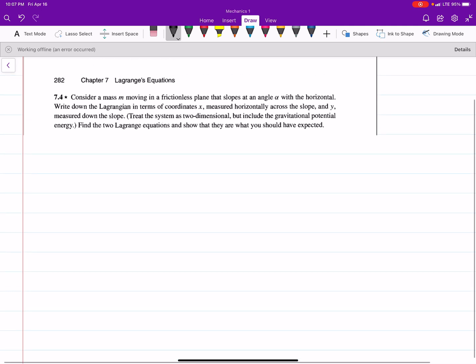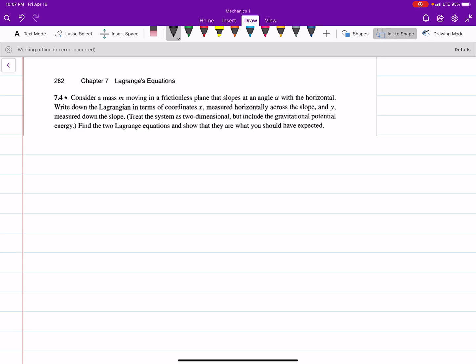Okay, so first off, let's draw a picture. We have some mass m. We have this angle alpha. We'll call this height h. And it slides on down, maybe to some point, say here. Okay.